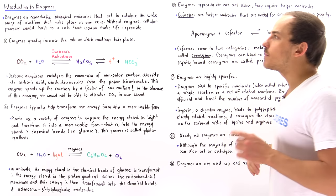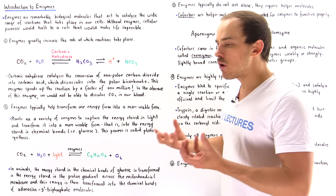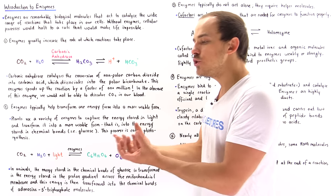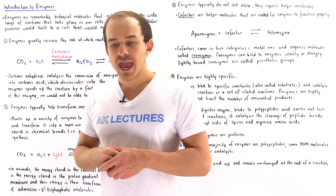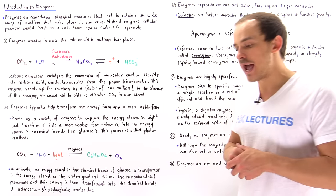Now fact number two about enzymes. Enzymes typically transform one form of energy into a much more useful form of energy. And one example is the process of photosynthesis which takes place in plants.